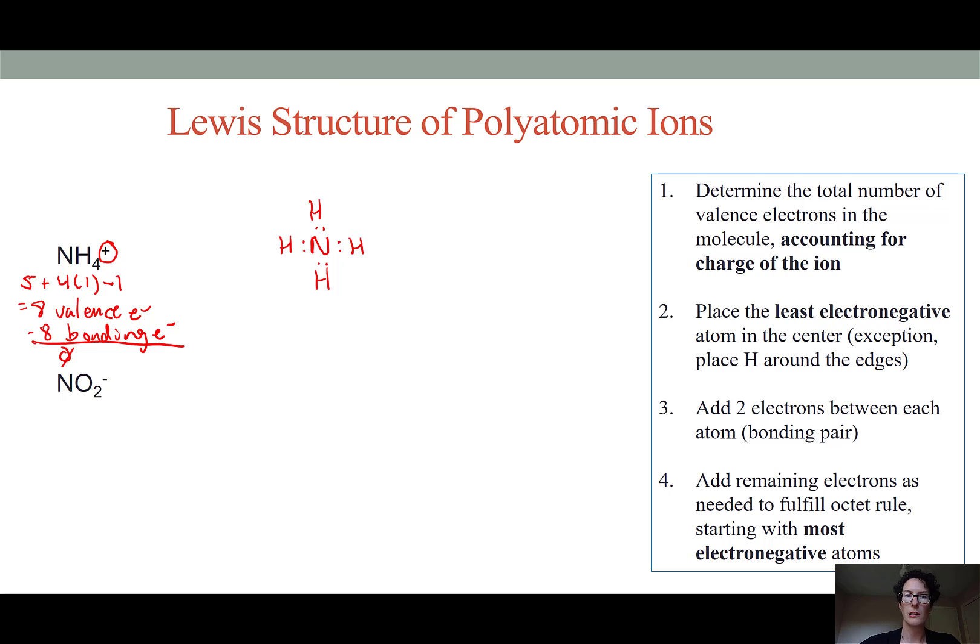A complete Lewis structure of ammonium we would place the nitrogen in the center and replace our bonding electrons with lines to indicate a bond. And then place the entire molecule within square brackets and as a superscript include that positive charge. And now we have the Lewis structure for ammonium.